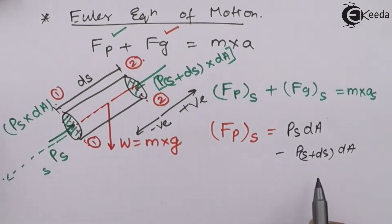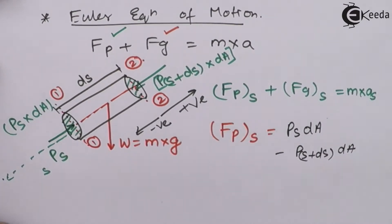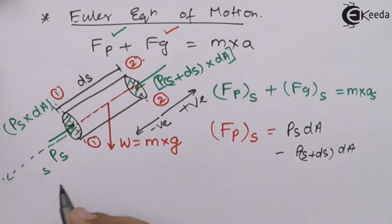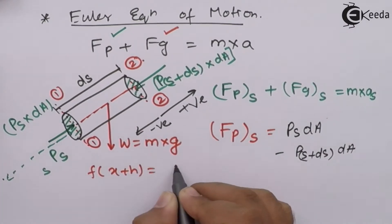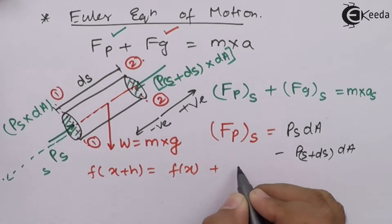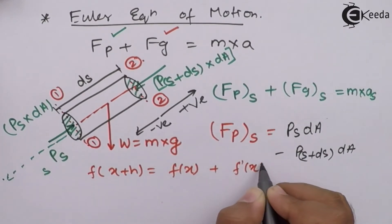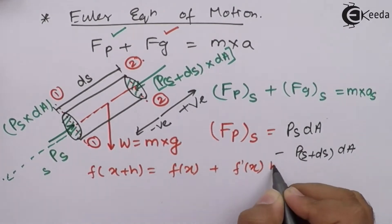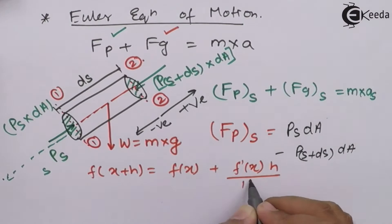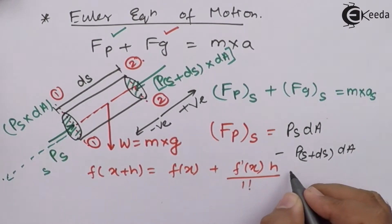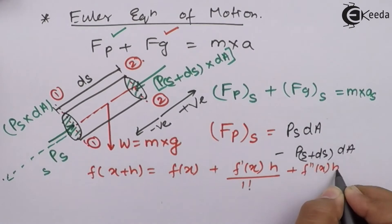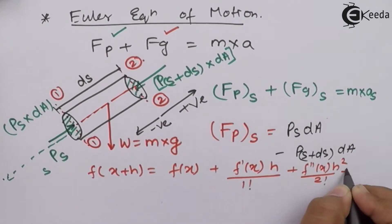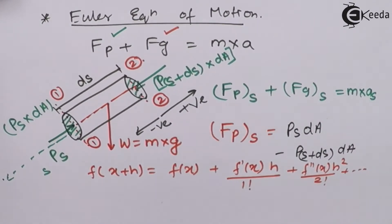Now let us expand P(s + ds) by Taylor series. We know that Taylor series gives f(x + h) equals f(x) plus f'(x)/1! times h plus f''(x) times h² / 2! and so on.